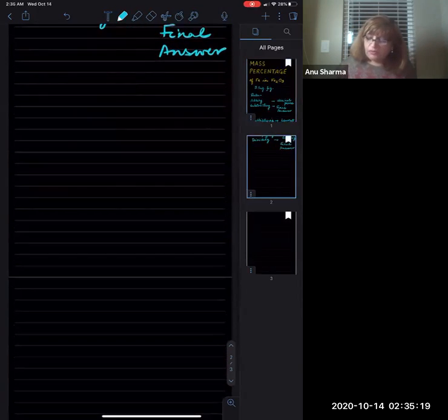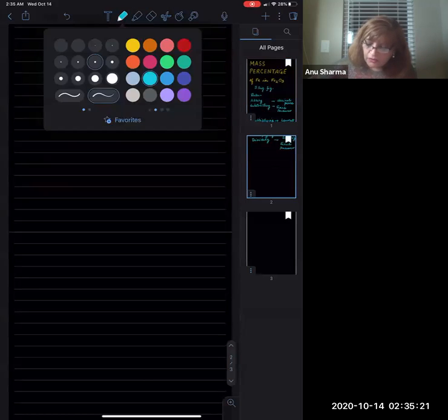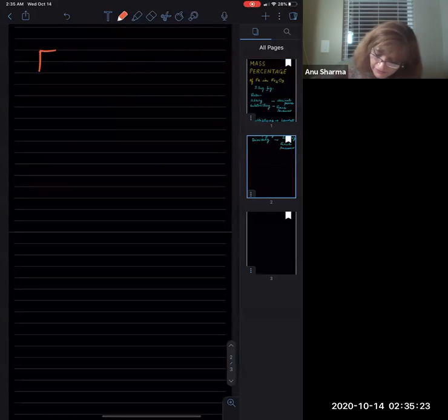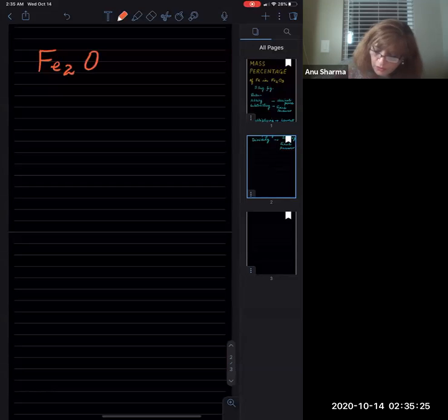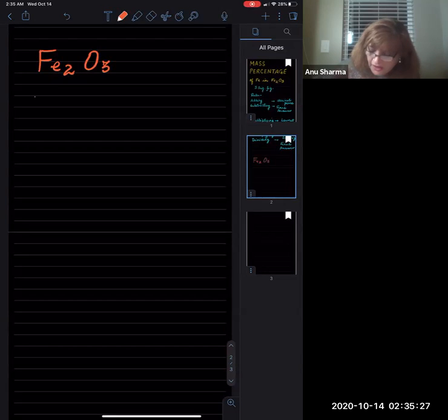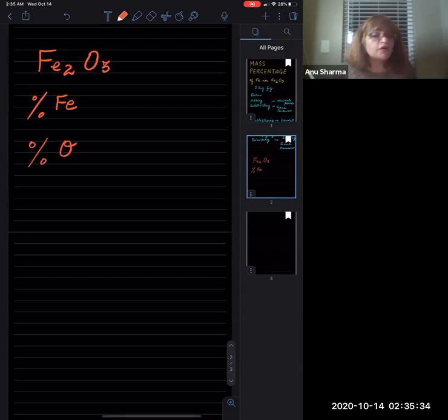So here we have a scenario where you are given Fe₂O₃ and they're saying find what is the percentage of iron. And since we are doing it, let's do the calculation for the percentage of oxygen also. For this, we need to find the molar mass of Fe₂O₃.